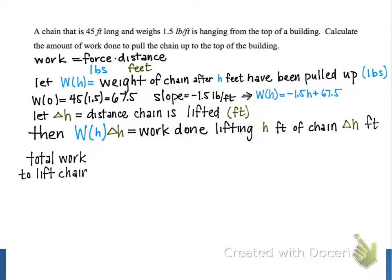The length of the chain that we are lifting varies from 0 feet to 45 feet. So the limits in our definite integral are 0 to 45. Our integrand is our weight function, -1.5h + 67.5, and our distance, Δh, becomes dh.